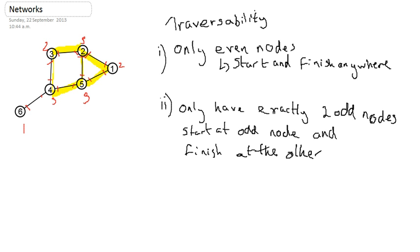Now, in my case I have four odd nodes and two even nodes, so it does not matter where I start or where I finish, that network is never going to be traversable. I'm never going to be able to travel on every single arc once without retracing.